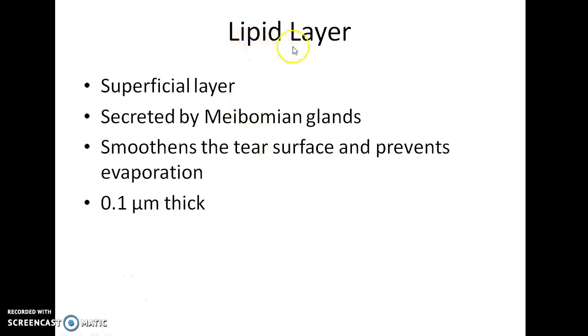The outermost layer is the lipid layer. It is a superficial layer secreted by the meibomian glands. It smoothens the tear surface and prevents evaporation. It is around 0.1 micrometers in thickness.